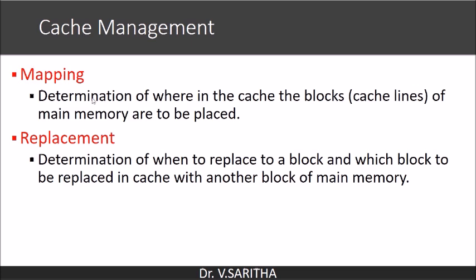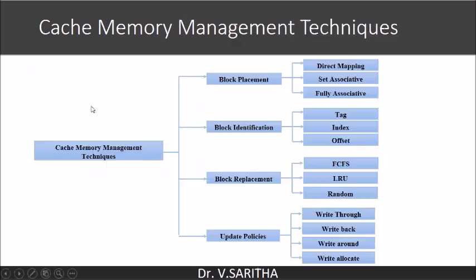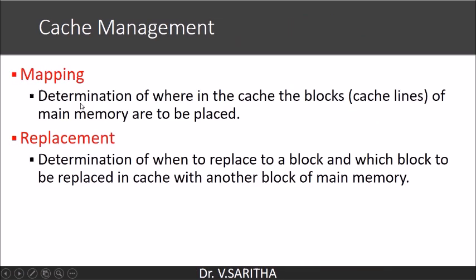Mapping, also called block placement, is the determination of where in the cache the blocks of main memory are to be placed — that is, when transferring information from main memory to cache, where to locate it. Replacement refers to deciding which block to evict when the cache is full and a new block needs to be brought in from main memory — this is decided by replacement algorithms.